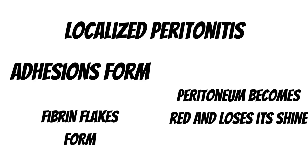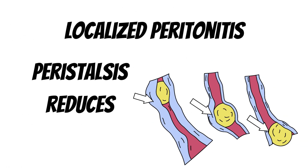Because of the peritonitis, the omentum tries to seal the perforation and there can be formation of adhesions within the abdominal contents. The various abdominal contents like the intestine and stomach can get stuck together because of adhesions, the peritoneum loses its shine and becomes red due to inflammation, and numerous fibrin flakes form within the peritoneal cavity. As a protective mechanism, peristalsis of the intestine reduces to prevent more leakage of content through the perforation.